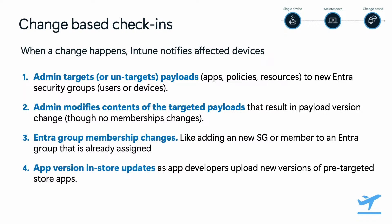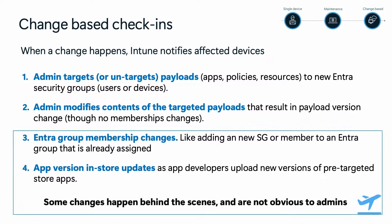And last, when developers publish a new version of their apps on an app store, that would also trigger a notification to users or devices impacted. While the first two are a direct result of an admin action, the last two might happen behind the scenes without the admin noticing — especially true for app store apps where the admin has no control over when those apps are updated by their vendor. Either way, those changes will result in Intune sending a push notification for devices to check in.